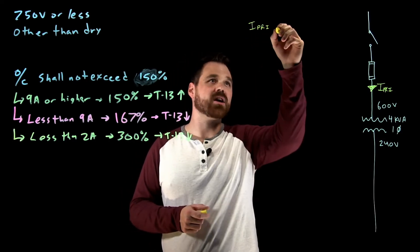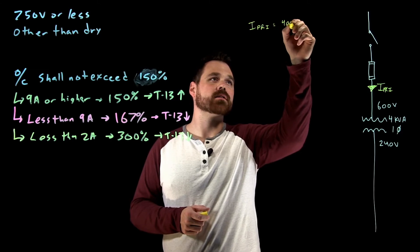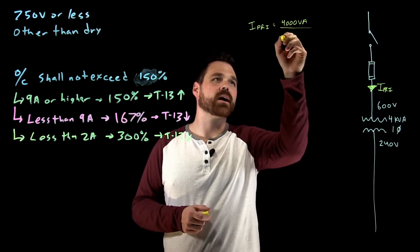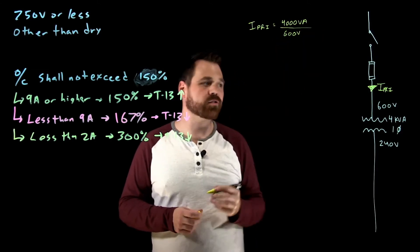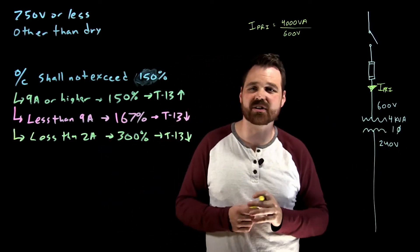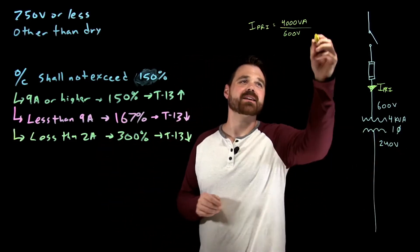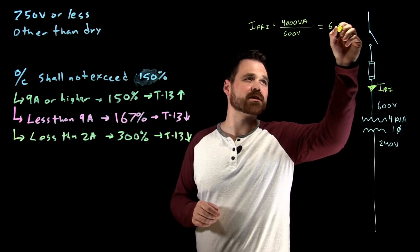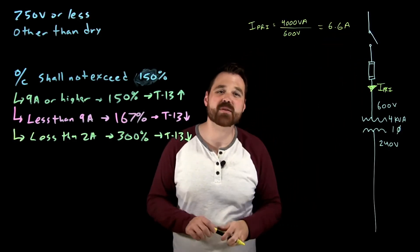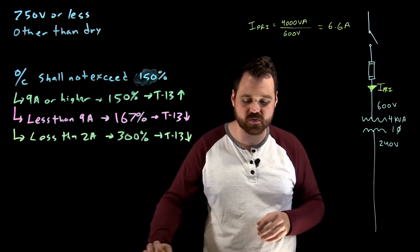I'm going to take my kVA, 4000 VA divided by 600 volts, no root three because we're just talking a single phase transformer. And in this case, I get 6.6 amps. That's my rated primary current of that transformer.